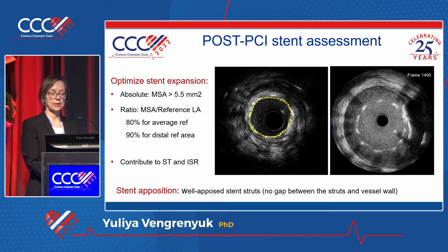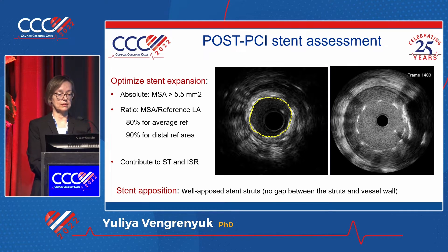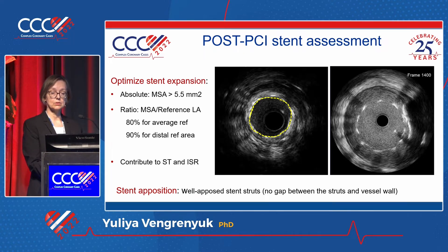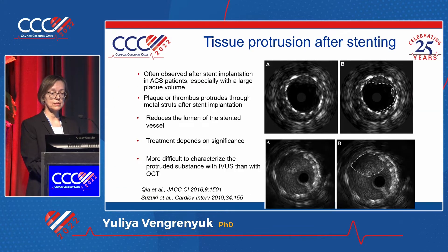Post-PCI stent assessment: the single most important parameter is stent expansion — measured as absolute minimal stent area or relative stent area to the reference area. IVUS can also help assess stent apposition. Minor stent malapposition (a gap between the strut and vessel wall) does not require treatment, but significant malapposition clearly requires intervention. Tissue protrusion is a very common finding after stenting, often observed especially in acute coronary syndrome patients.